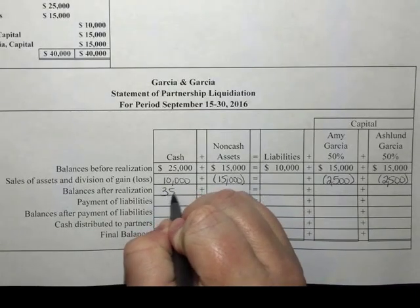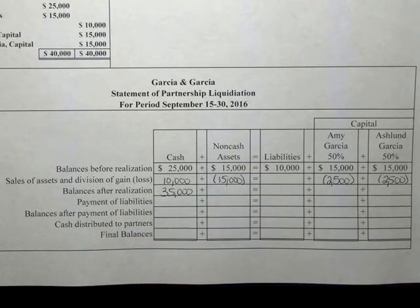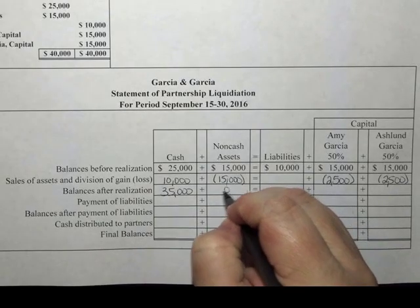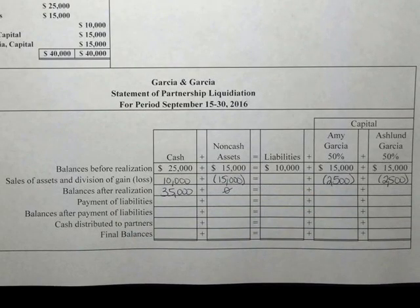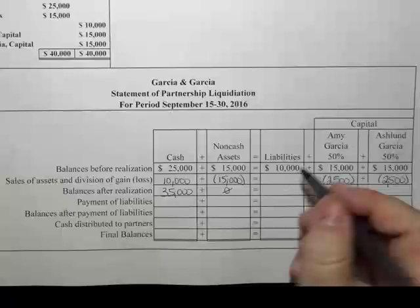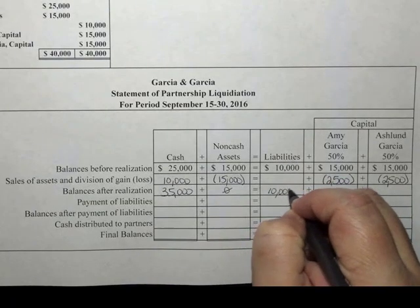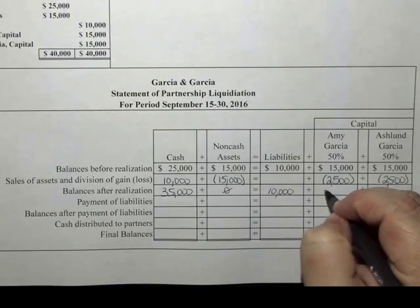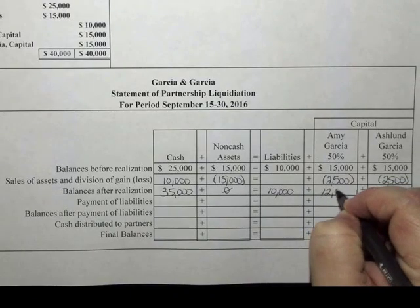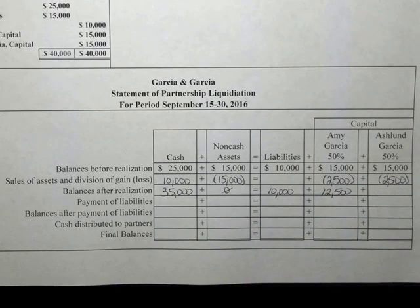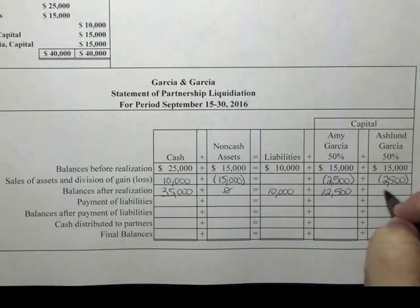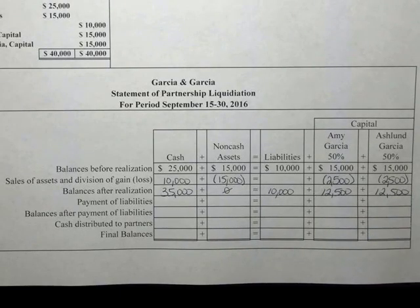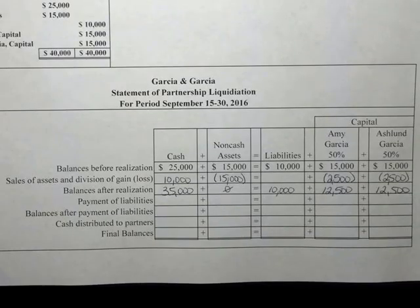The balances after realization show $35,000 in cash, zero non-cash assets, $10,000 in liabilities. Amy Garcia now has $12,500 in her capital account and Ashland Garcia has $12,500 in her capital account.